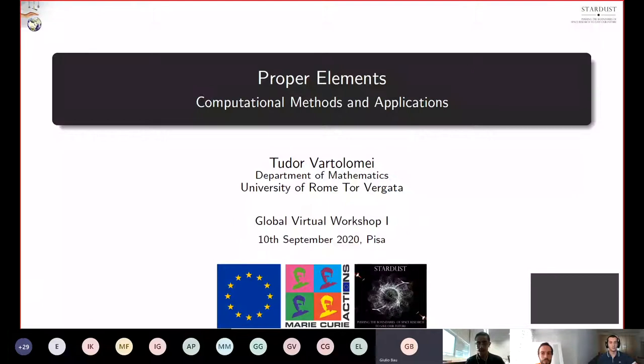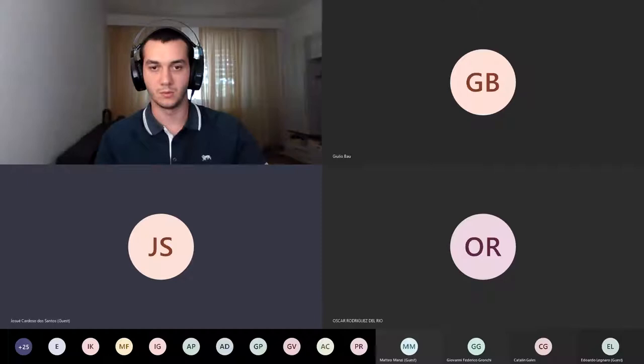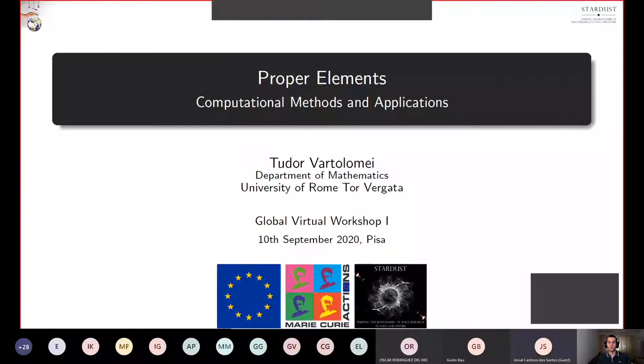I would like to say to Tudor that you can switch on your camera while I would suggest to Josue to switch off his camera. Do you see me now? Yes. It looks like my camera is on. Now we can see you. Do you see me? I can see you.